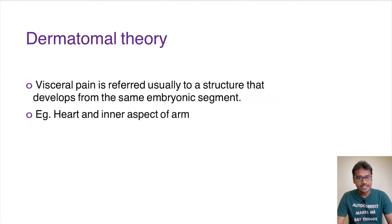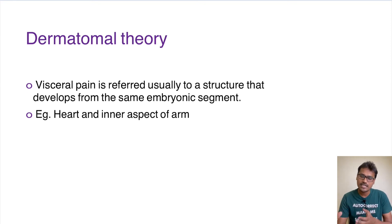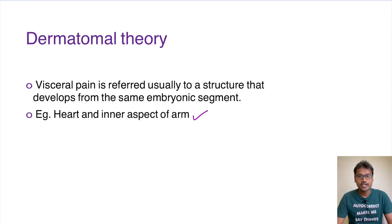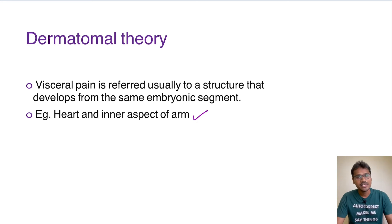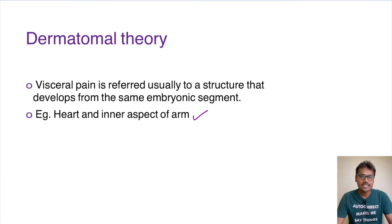Coming to the dermatomal theory — this theory is pretty simple. The pain in the viscera is referred to the area wherever it is having a similar embryonic origin. Basically, both the viscera and the surface of the body share a similar embryonic origin, such that the pain is transferred to that region. Classical examples are: in myocardial infarction, the inner aspect of the arm also has pain. Similarly, pain in the gallbladder is usually referred to the tip of the right shoulder.